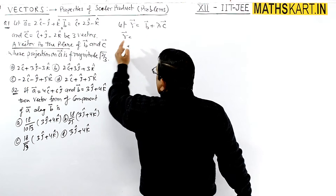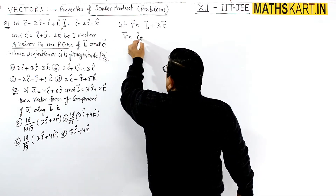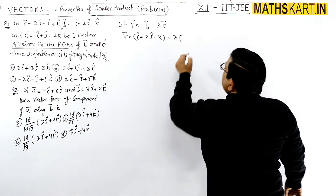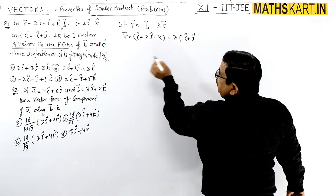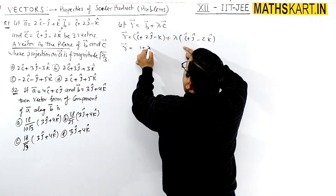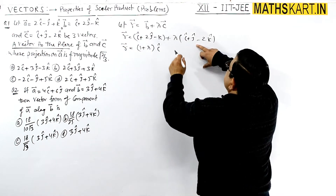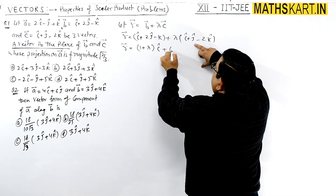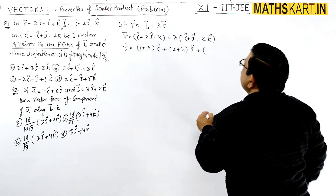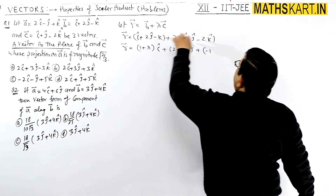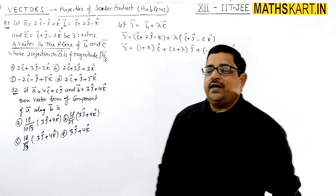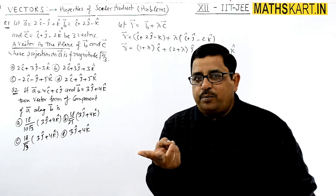So r equals b, which is i + 2j − k, plus λ times c vector, that is i + j − 2k. Expanding in vector format: (1 + λ)i + (2 + λ)j + (−1 − 2λ)k. This is the required r vector which is in the plane of b and c.